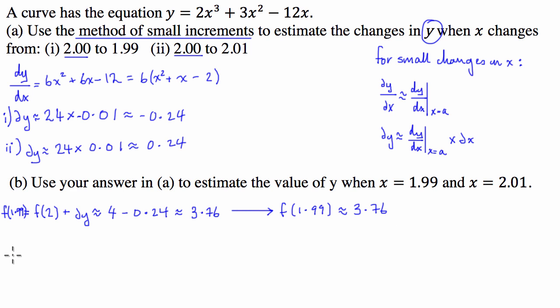From that we can say the function at 1.99 is approximately equal to 3.76. And we'll do the next one: the function at 2.01 again is just going to be equal to the function at 2 plus delta y, which is 4 and the delta y for the second one is positive 0.24, so that's approximately 4.24. So the second answer to our problem is the function at 2.01 is approximately equal to 4.24.